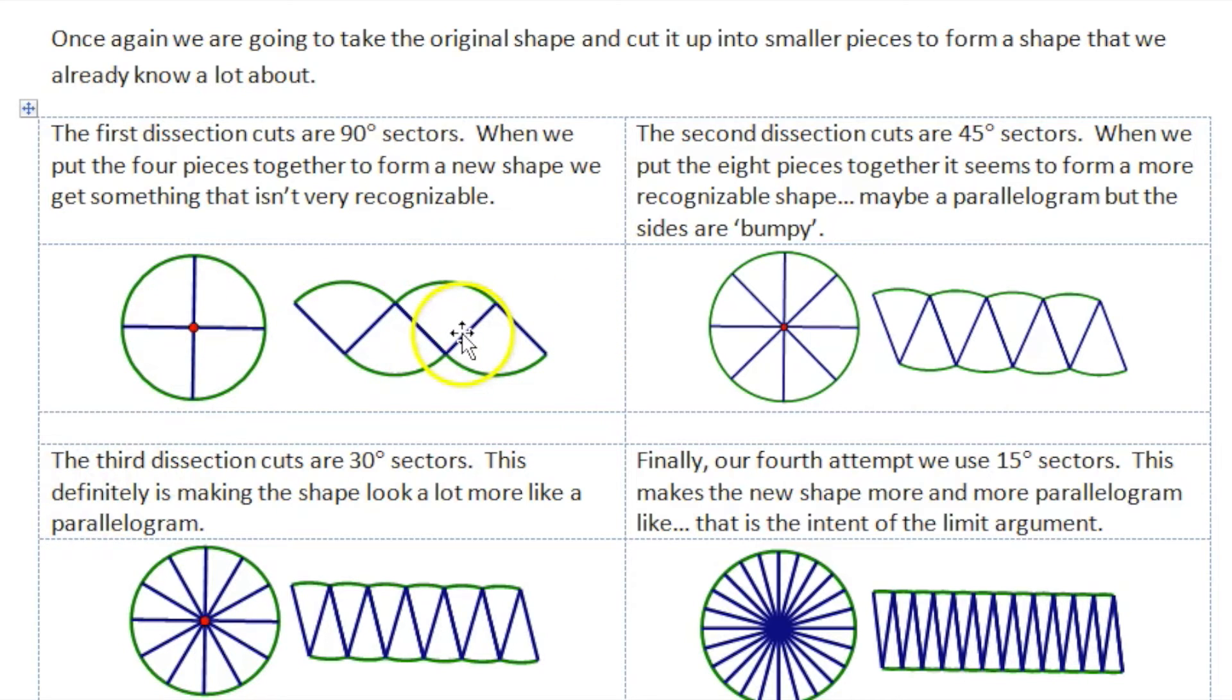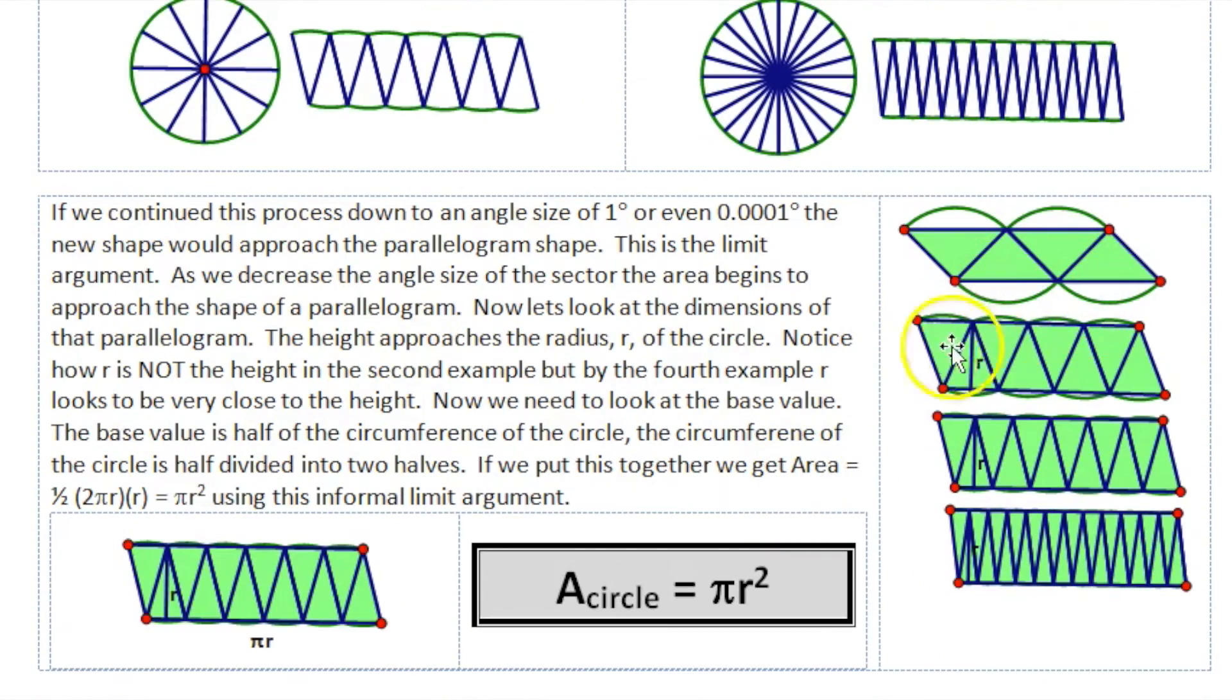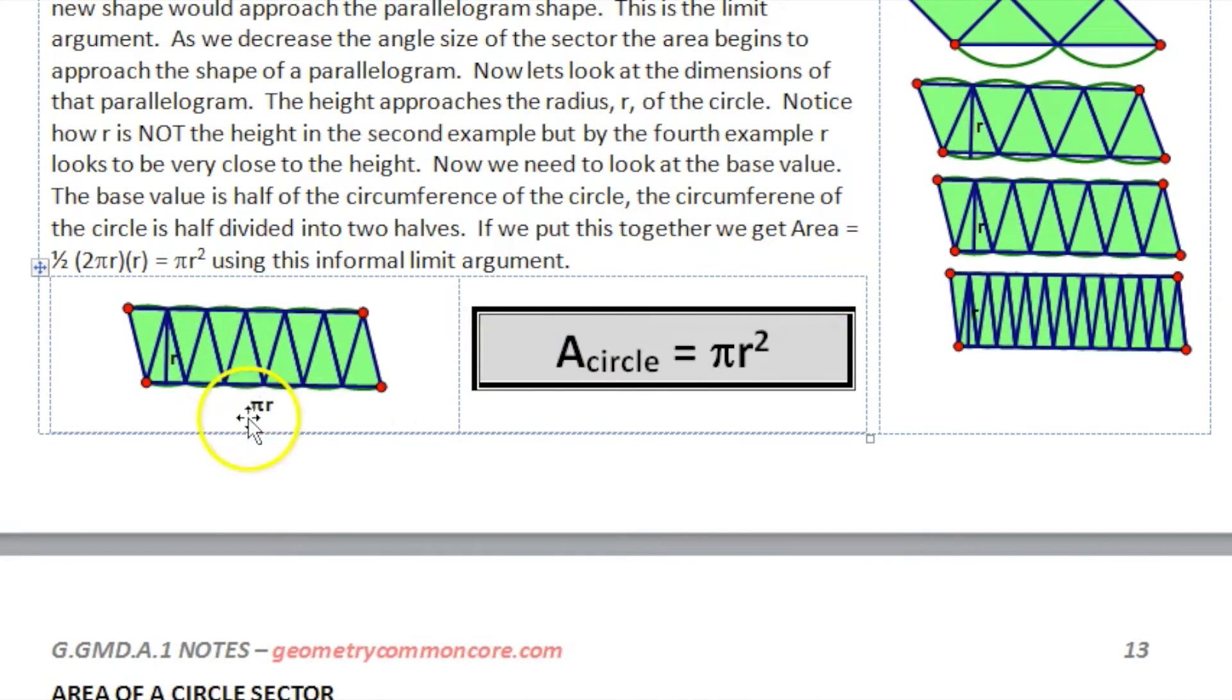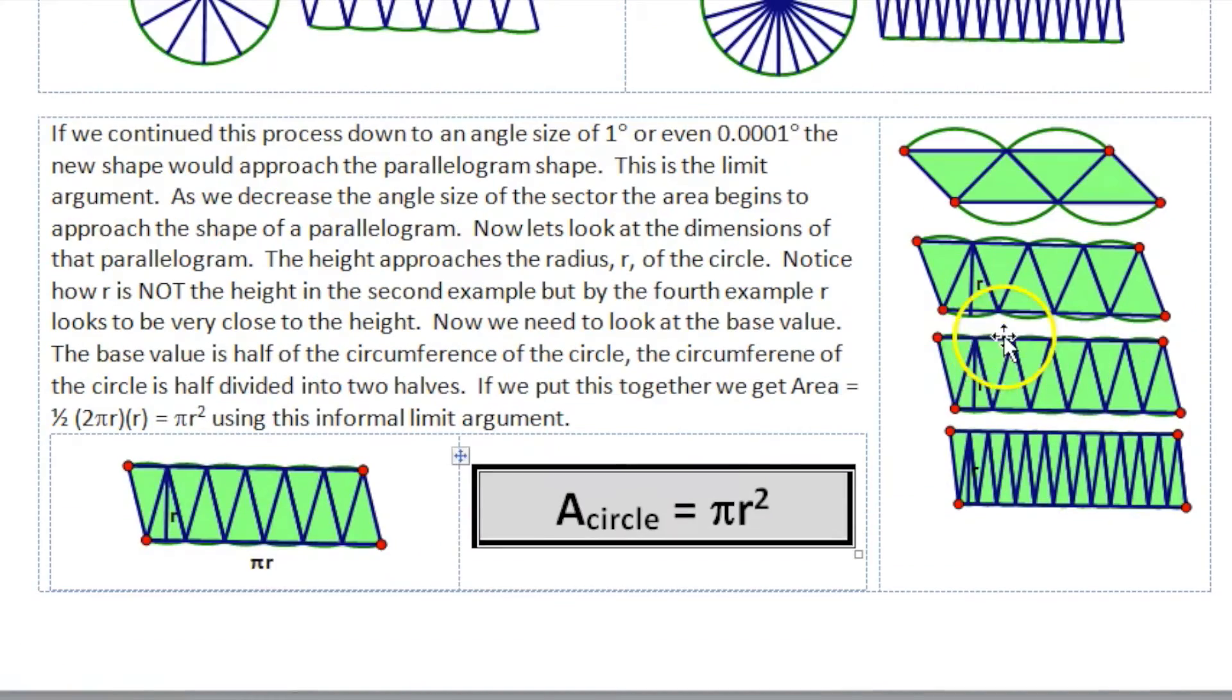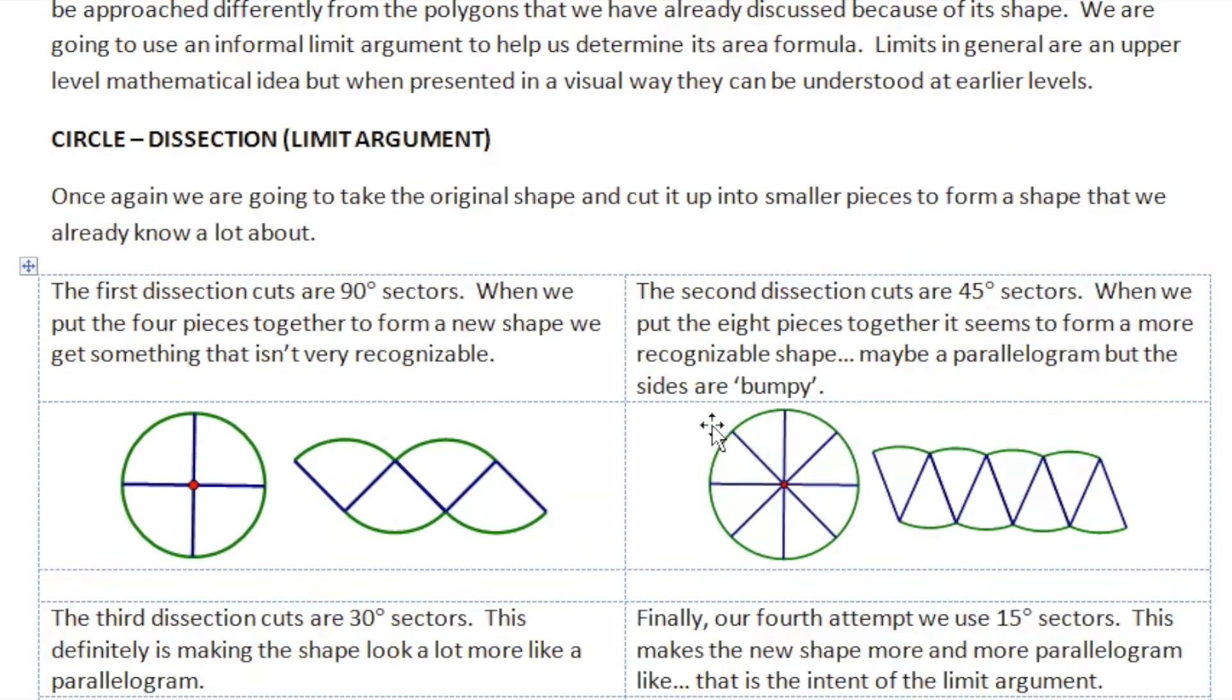It talks about this whole idea of to a limit. And so we do big pieces and smaller and smaller, and then talk about how it forms the parallelogram. And as we get smaller and smaller, it becomes more and more parallelogram-like. We establish that formula and where it comes from. There's an activity that actually has you cut these things out and paste them and try them. We hit this particular question right on, and students would see it and know exactly what to do.